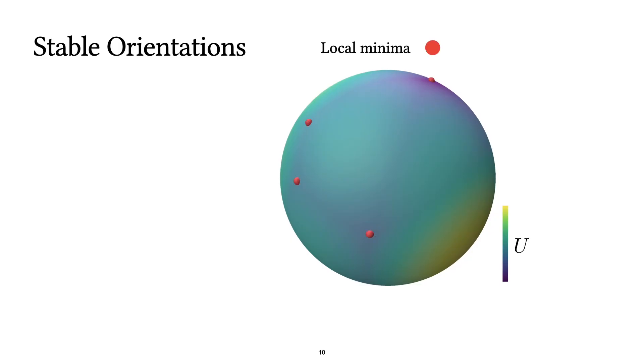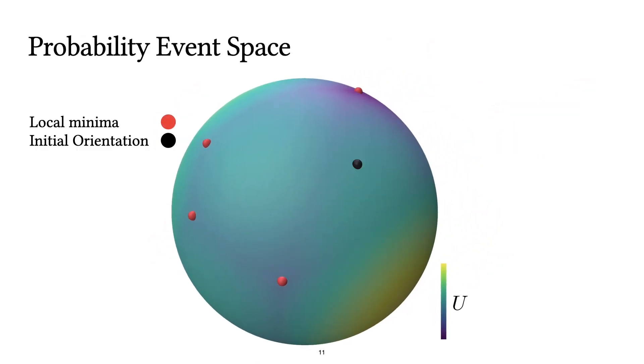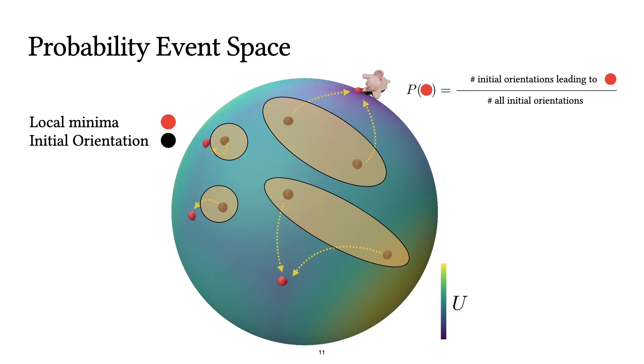Also, the local minima of this function correspond exactly to stable orientations of the shape. If we orient the object with an initial orientation and let it fall on the ground, the orientation changes until it ends up at the local minima that corresponds to the stable orientation. If we do this for many initial orientations and record their final local minima, then the ratio of the initial orientations that lead to the same local minimum corresponds to the probability of that stable orientation.